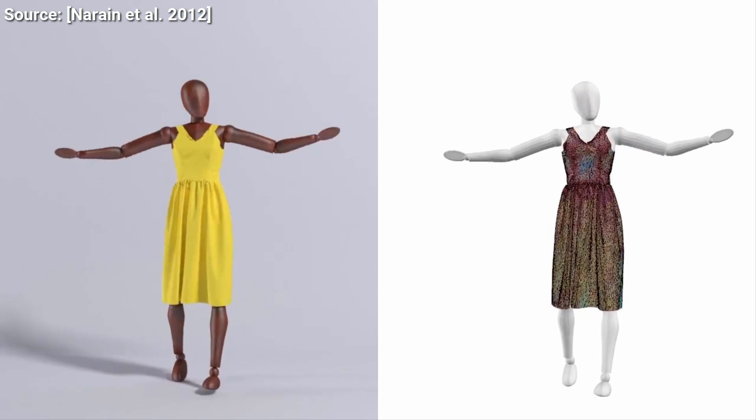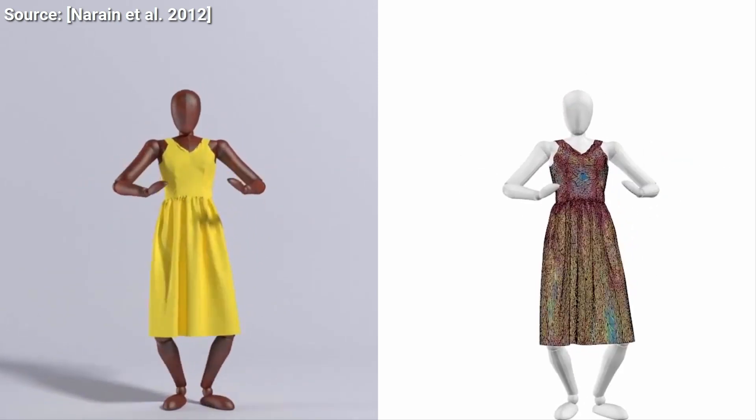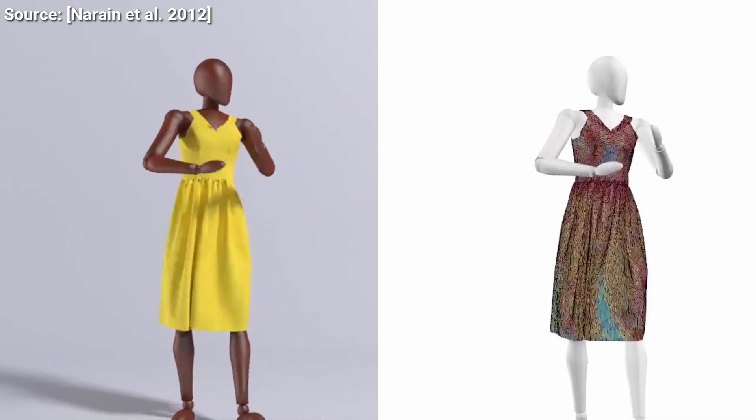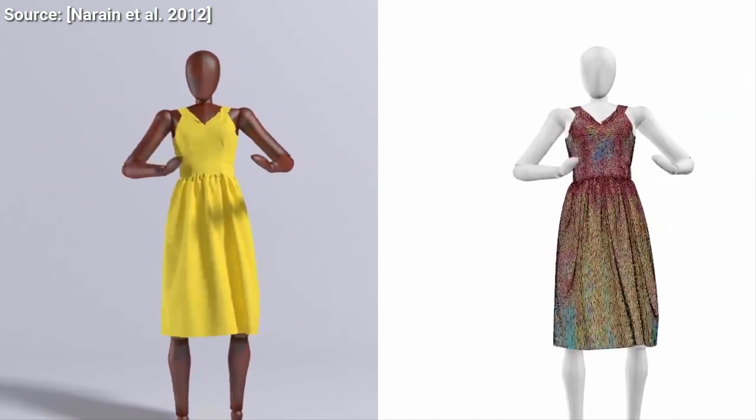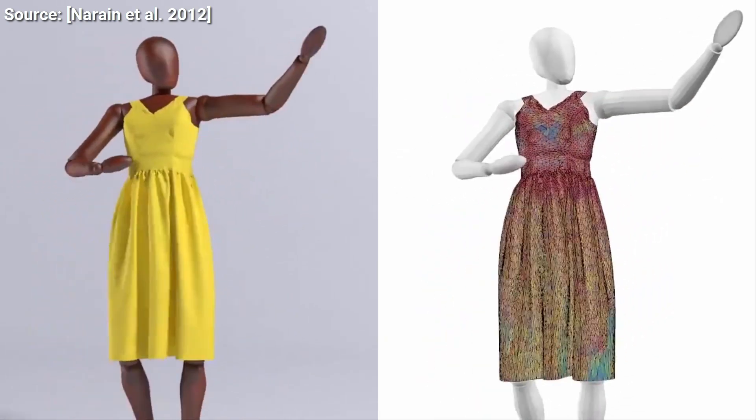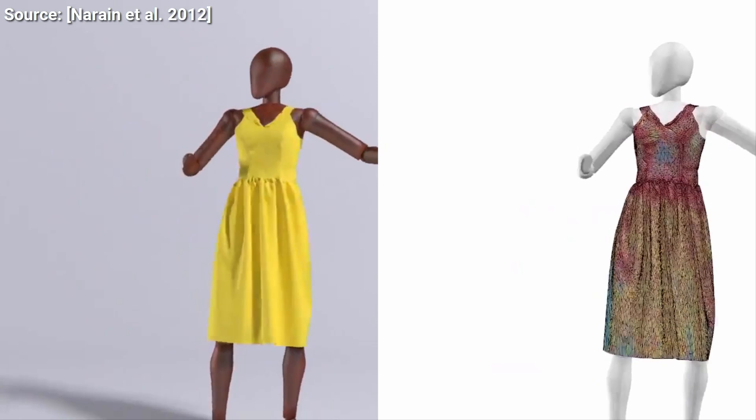We have talked about adaptive fluid simulations before. Adaptive means that the technique tries to adapt to the problem that we have at hand. Here, in the world of cloth simulations, it means that the algorithm tries to invest more resources in computing regions that are likely to have high fidelity details, such as wrinkles.